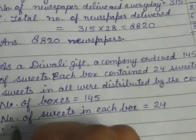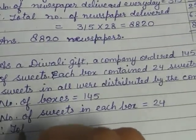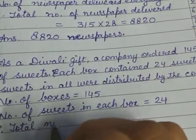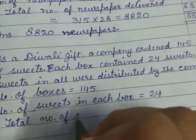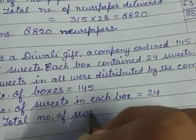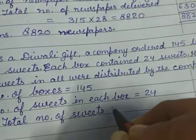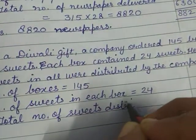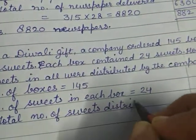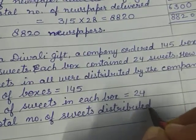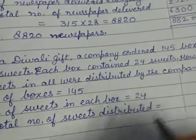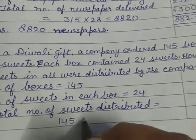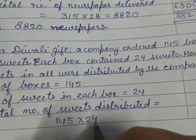क्या करेंगे इसके लिए? जो number of boxes है उसको number of sweets से multiply कर देंगे. Therefore, total number of sweets distributed is equal to 145 multiplied by 24.